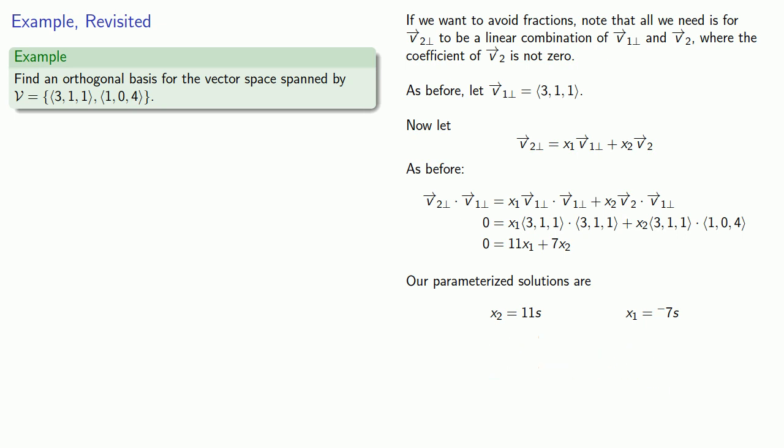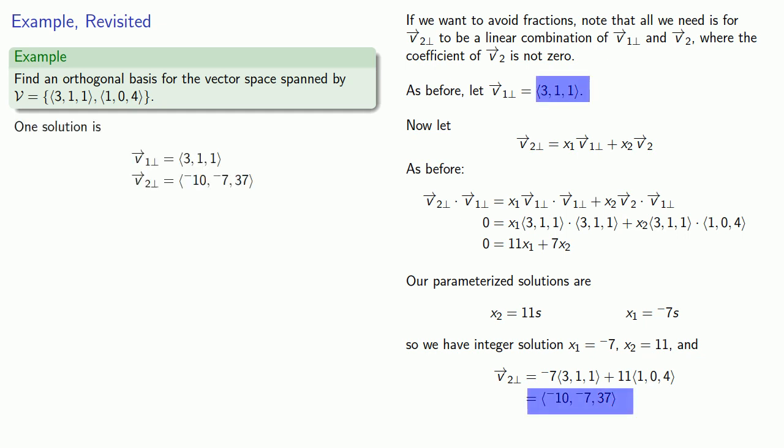And so, that gives us integer solutions: x₁ = -7, x₂ = 11. And so, v̄₂⊥, substituting these into our formula, will be (-10, -7, 37). And so, these two vectors can be used as an orthogonal basis for the vector space spanned by our original two basis vectors.